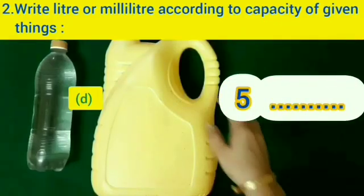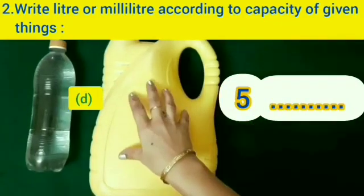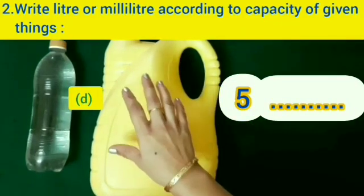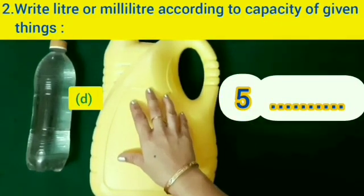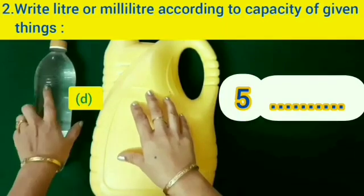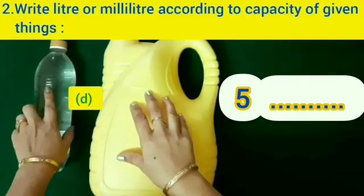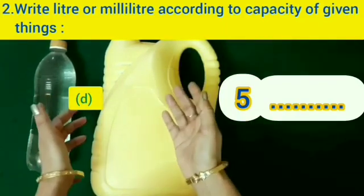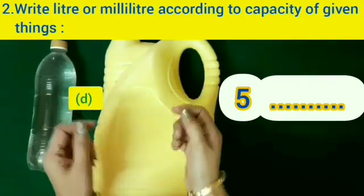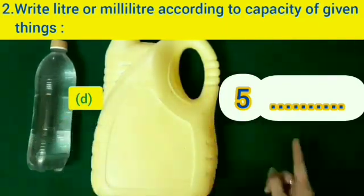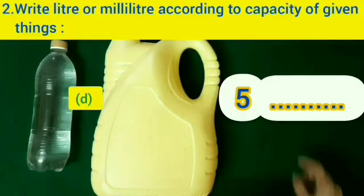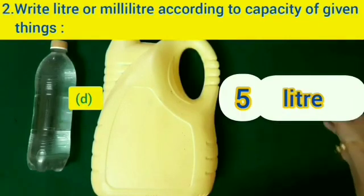Now look at this big oil canister. Its capacity is more than this one-liter water bottle — its capacity is five liters, so we will write liter.